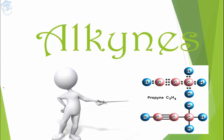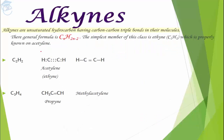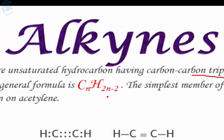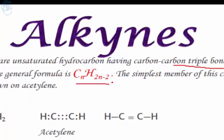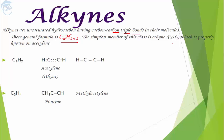In this video we are going to study about alkynes. First of all, they are unsaturated hydrocarbons because they will not have the maximum number of hydrogen atoms attached. They have a carbon-carbon triple bond, and their general formula is CₙH₂ₙ₋₂. The simplest member: put n = 2, then 4 − 2 = 2, so it will be C₂H₂.